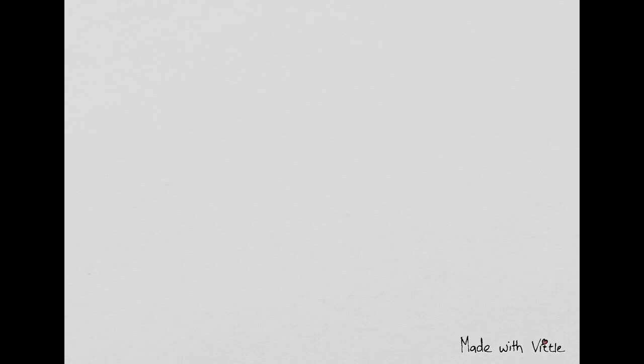The doomsday for a year is: anchor plus y/12 plus remainder of y/12, and then that remainder divided by 4.